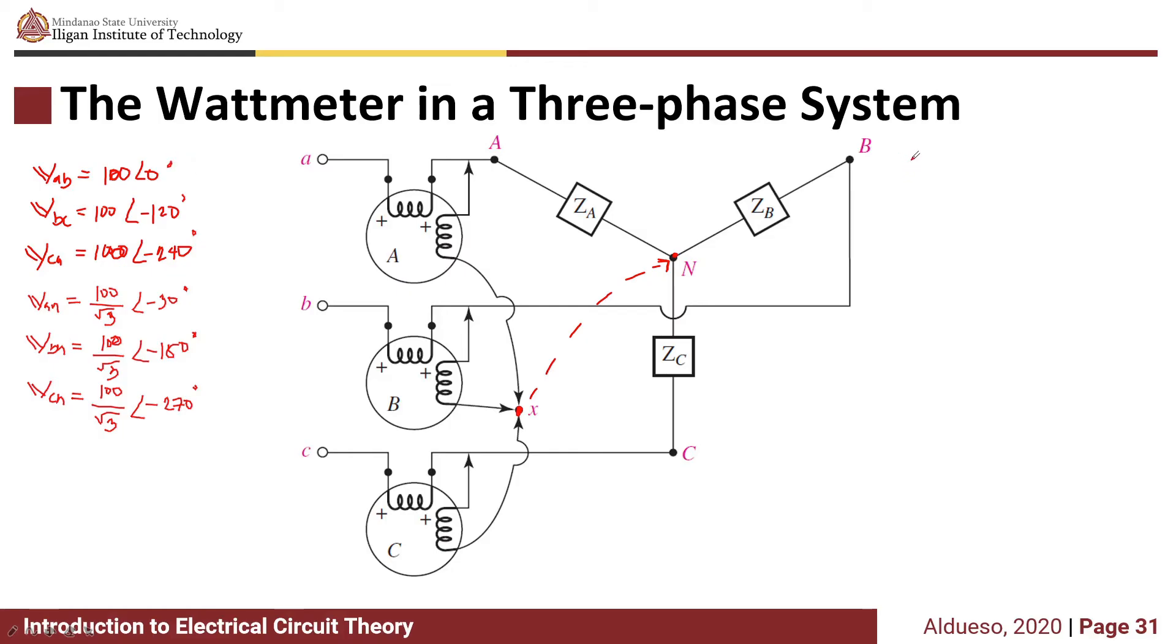Let's say we have an imbalance in the phase loads where ZA = -j10 ohms, ZB = j10 ohms, and ZC = 10 ohms.